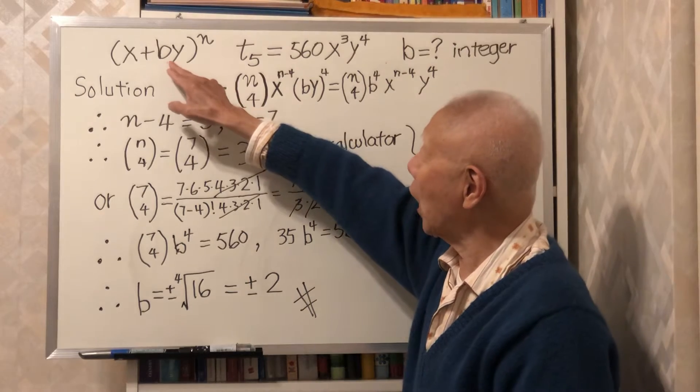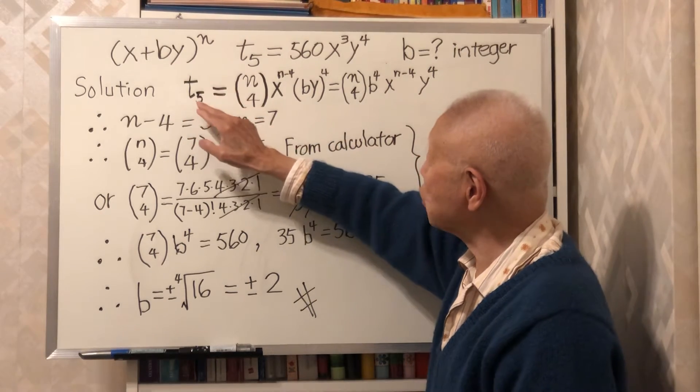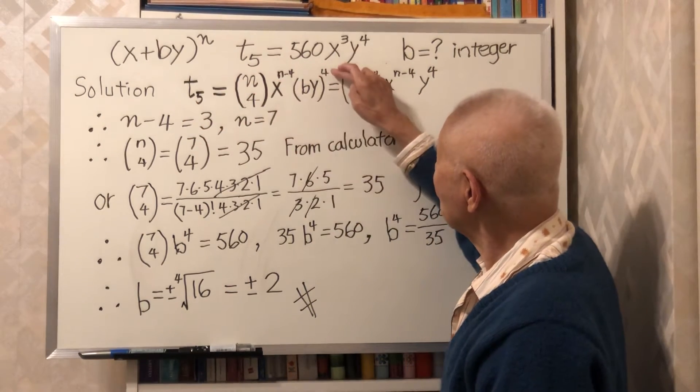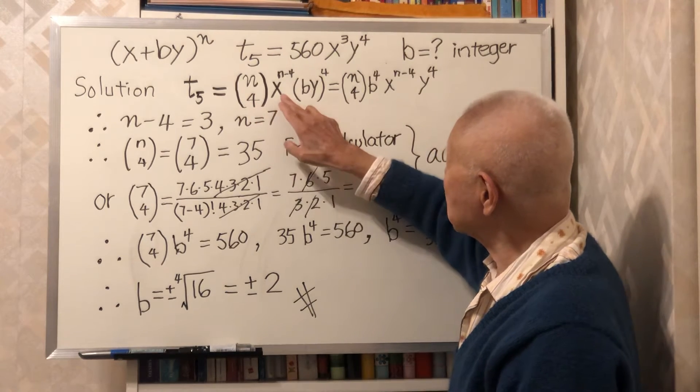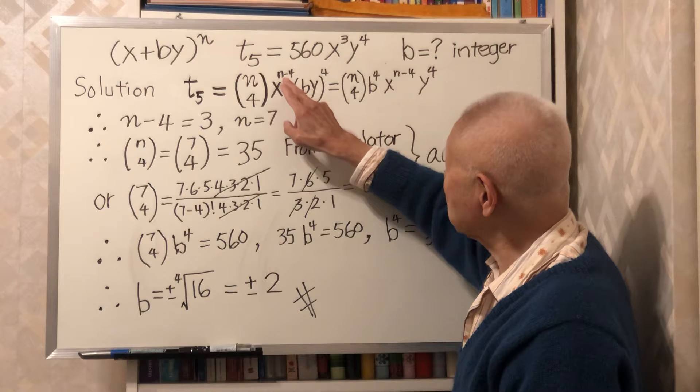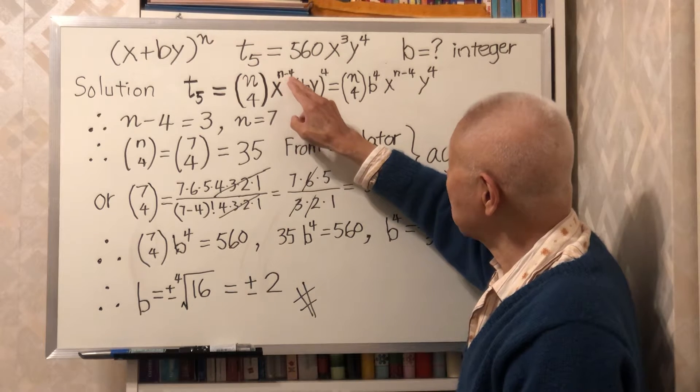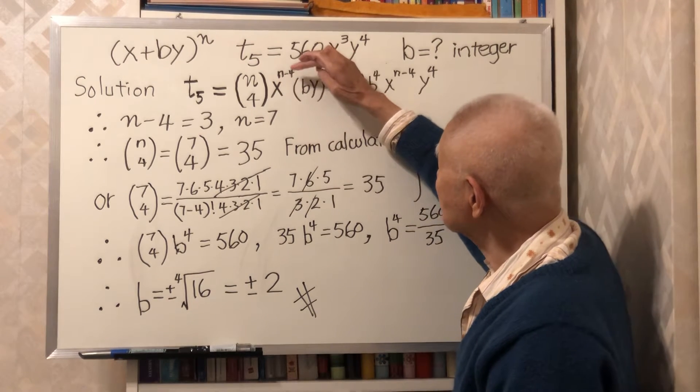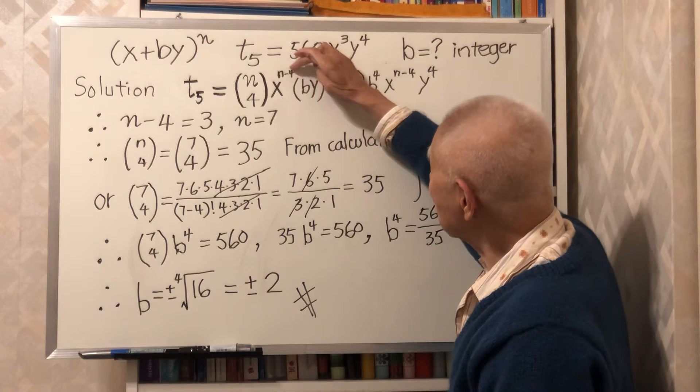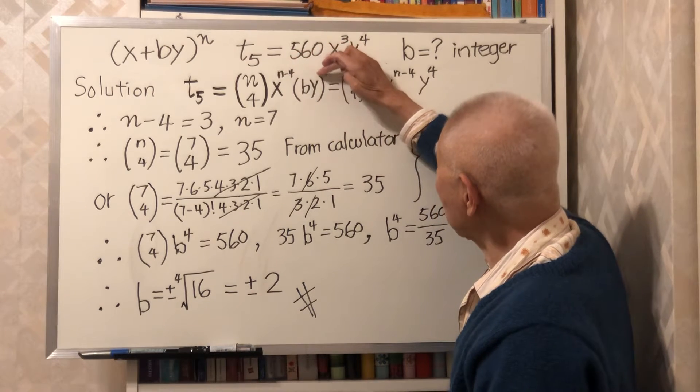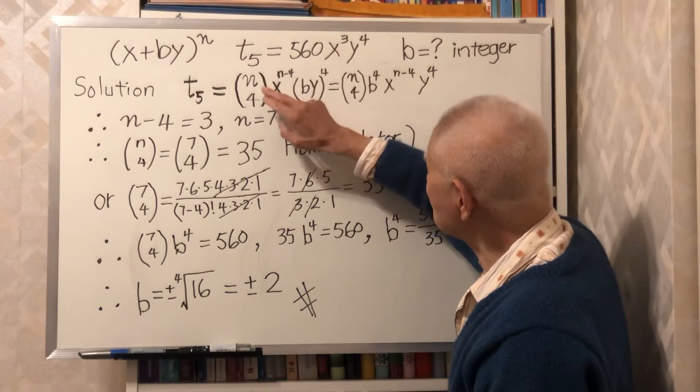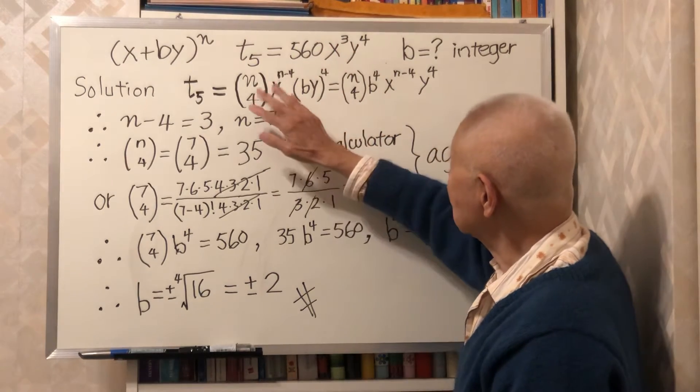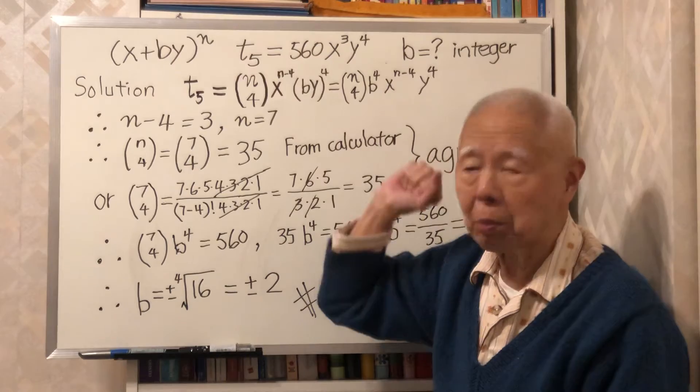This term by goes to power 4, goes to this power 4. And x goes to power n minus 4, because this exponent plus this exponent must equal to n. So this is the formula.